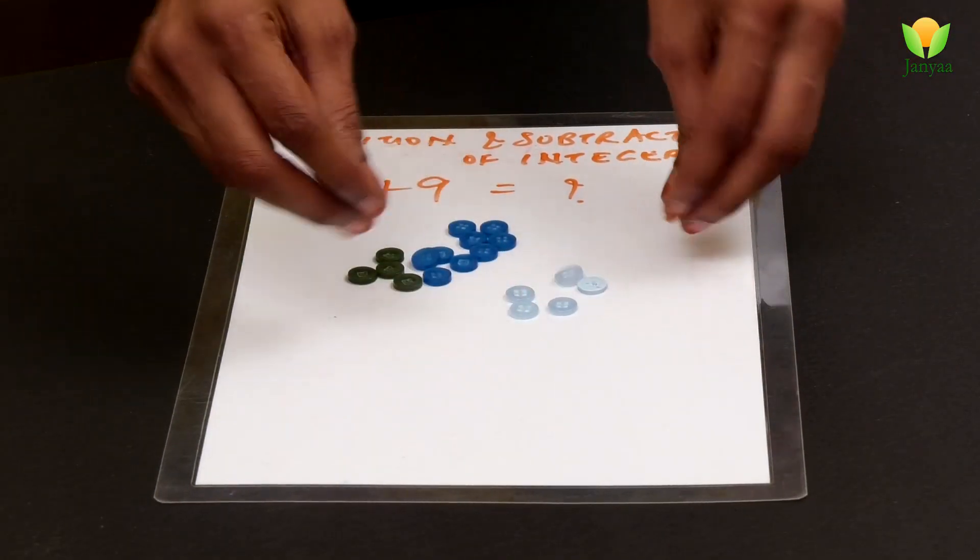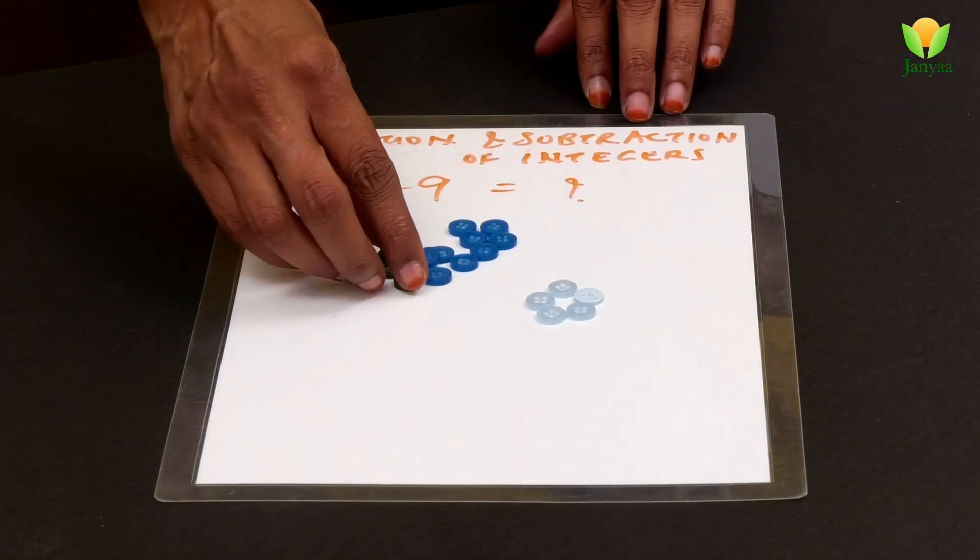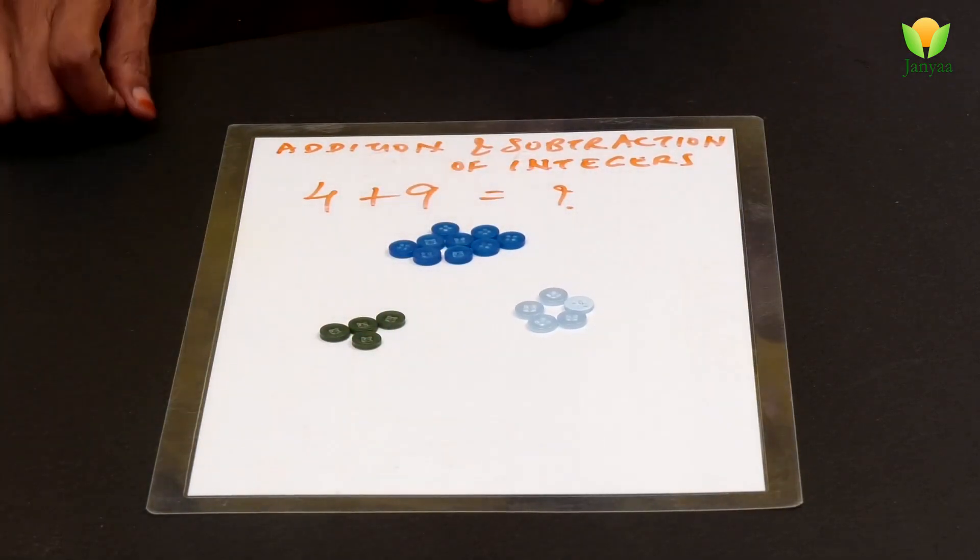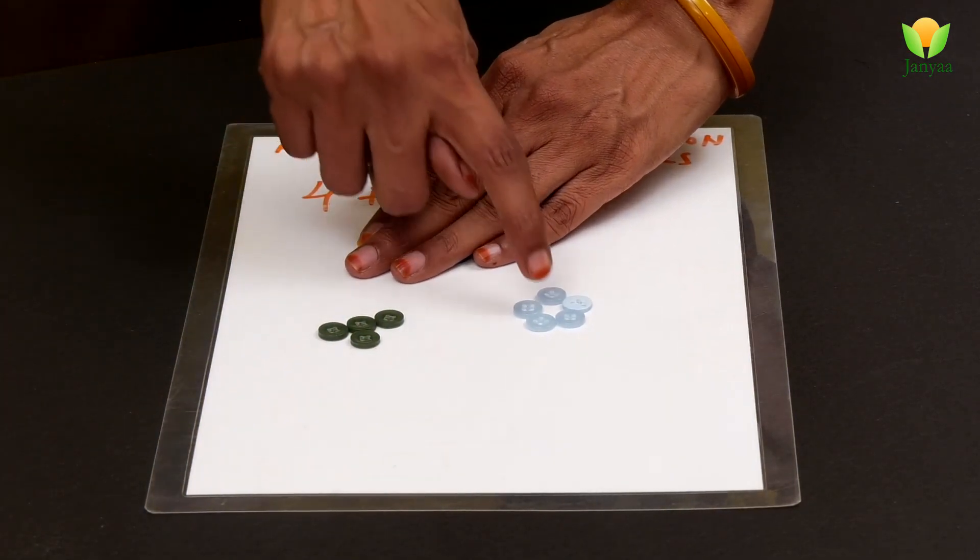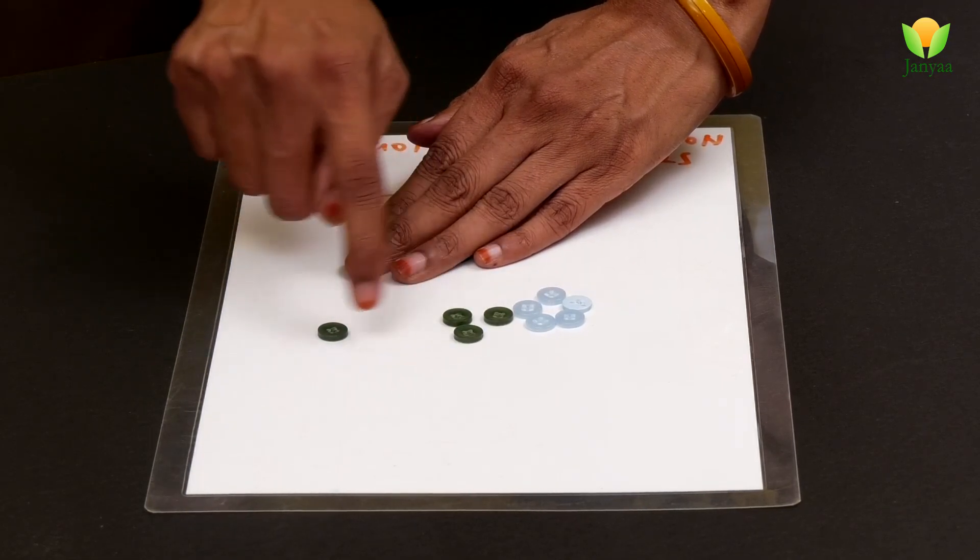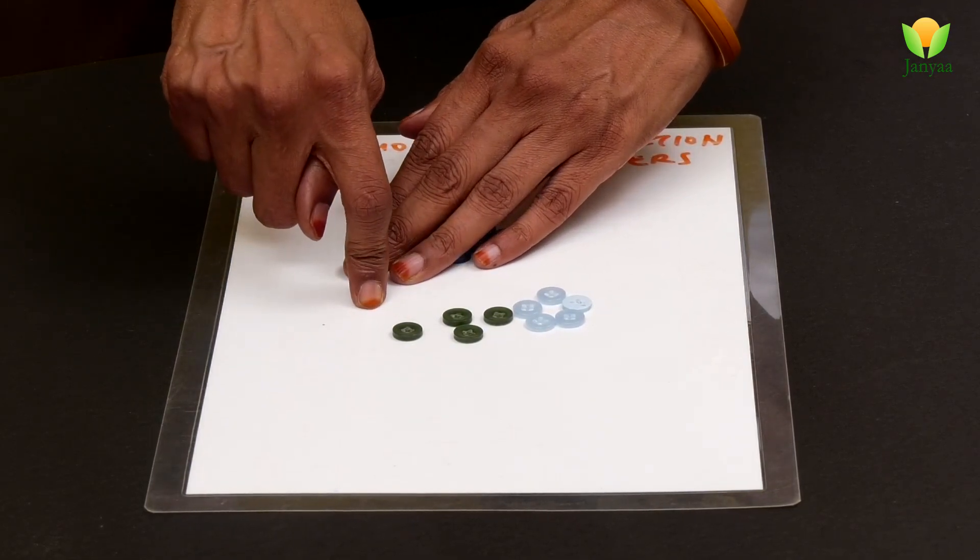Let me bring these light colored buttons as well. We have 5 and I want to add them to these 4 buttons. Let me count: 5, 6, 7, 8, and 9. So 5 plus 4 equals 9.